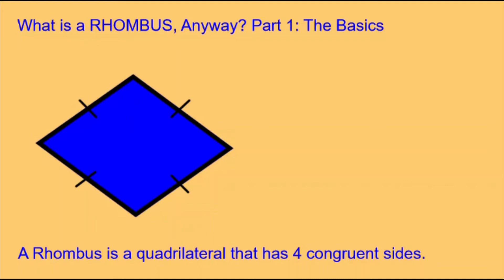Today's Daily Dose of Math is about the rhombus. We'll look at the basics of a rhombus. The definition of a rhombus is a quadrilateral that has four congruent sides. In this diagram of a blue rhombus, we can see that there are little lines on each of the four sides, indicating that these four sides are congruent — they are equal in length.